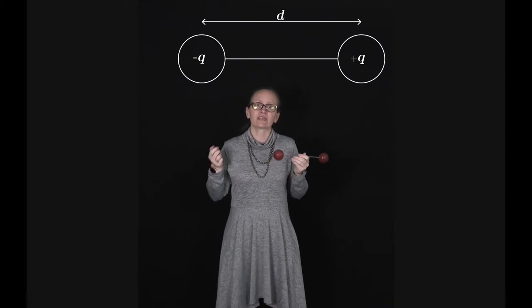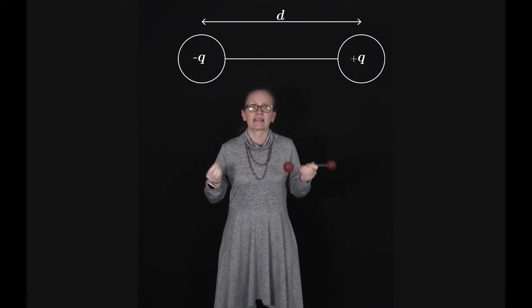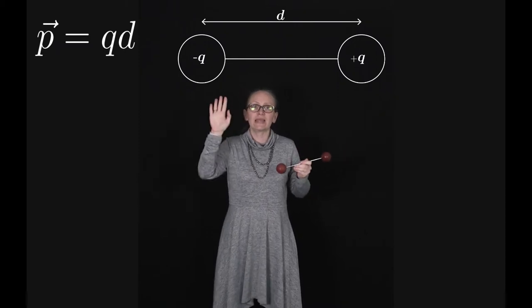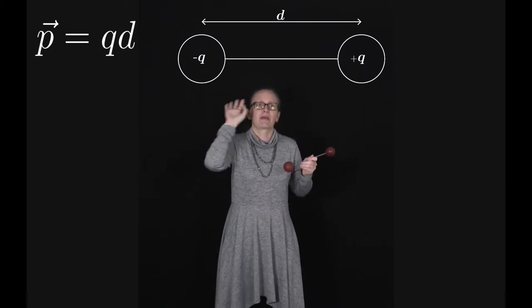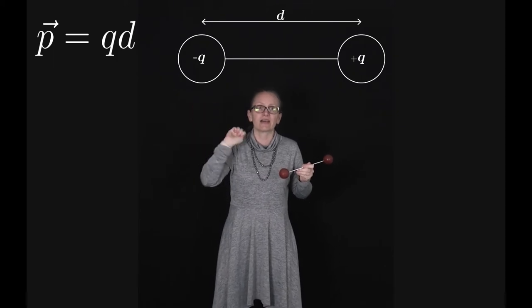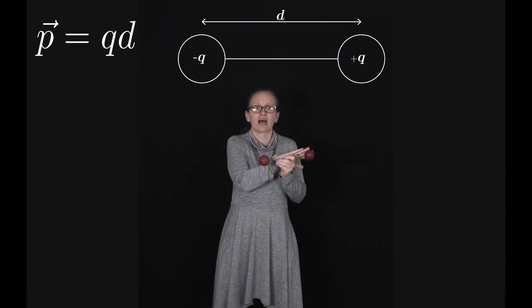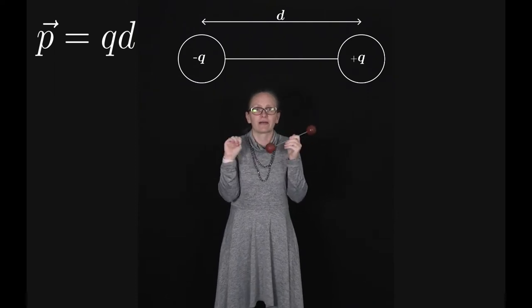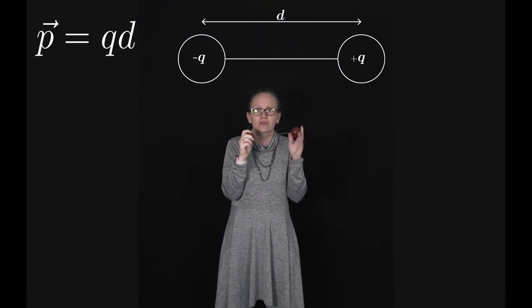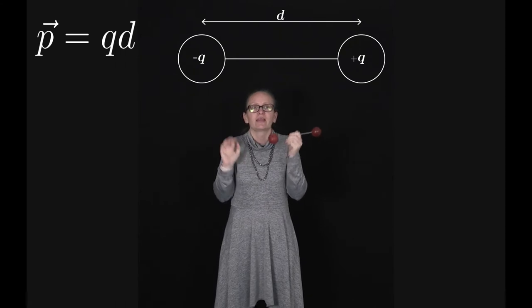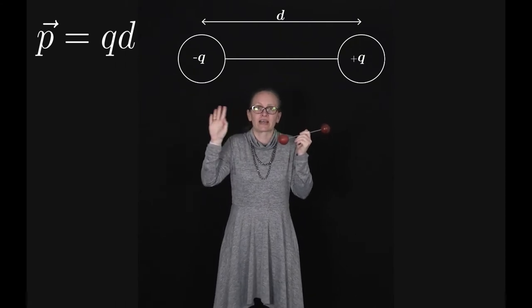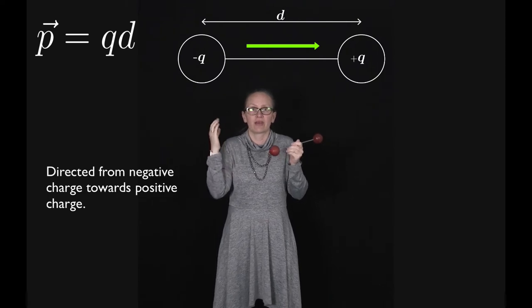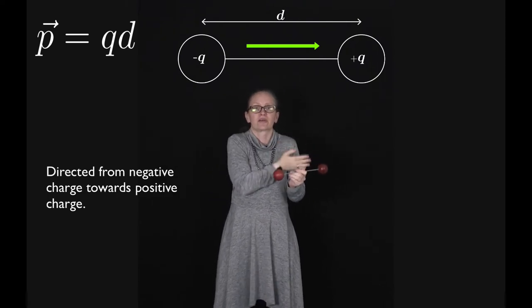Physicists find it useful to define an electric dipole moment, given by the equation p equals qd, where p stands for the electric dipole moment and is a vector, q is the charge, and d is the distance between the two charges making up the dipole. Since p is a vector it has a direction, and the direction is taken as being from the negative q to the positive q.